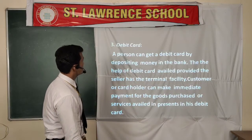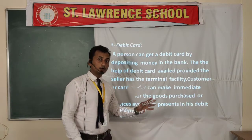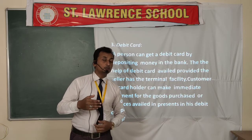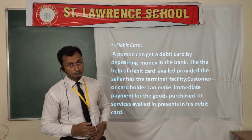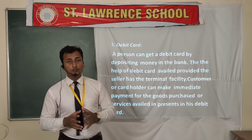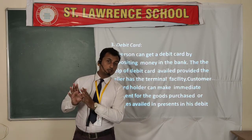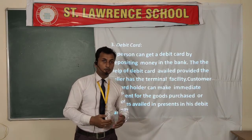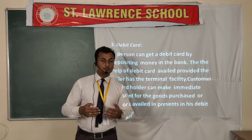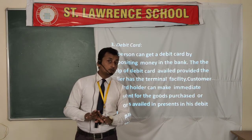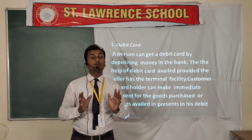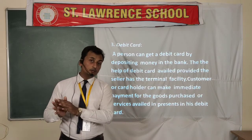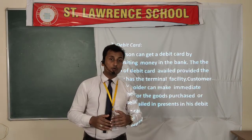Next is the debit card. A debit card is an ATM card. You can get a debit card if you have an account in the bank. Whatever amount you have deposited in your bank, only up to that amount can you use your debit card or withdraw money from the ATM machine. A certain minimum amount should be deposited in your bank account, and according to that limit you can withdraw money and make payment for goods and services.